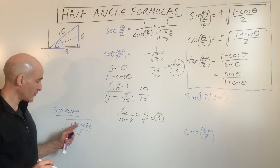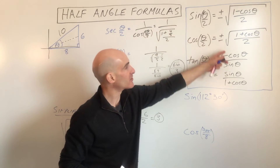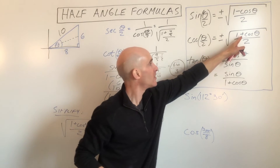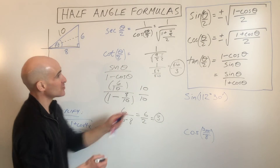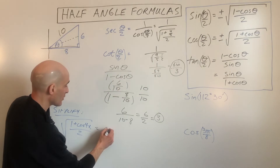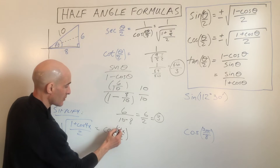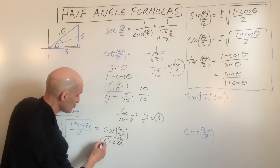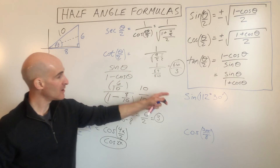Next, simplify the expression √((1 + cos 4x) / 2). This matches the cosine half-angle formula. Substituting, we get cosine of 4x/2, and since 4 divided by 2 reduces to 2, this simplifies to just cosine of 2x. So we've condensed that expression using the half-angle formula.